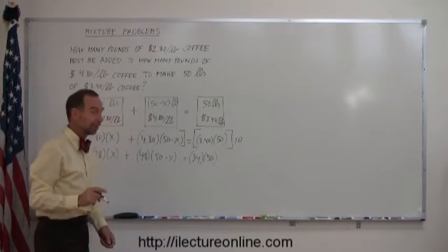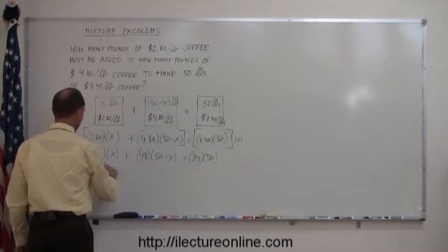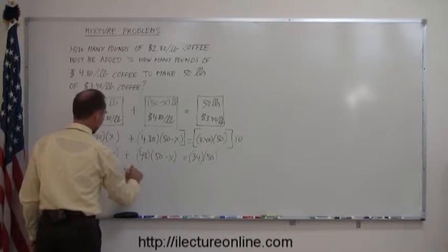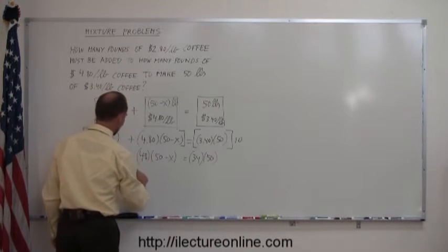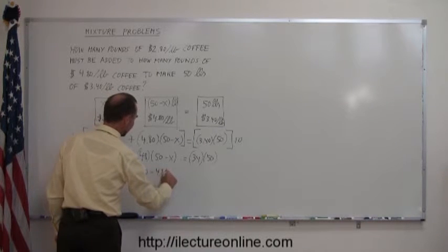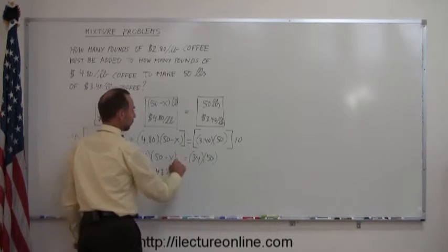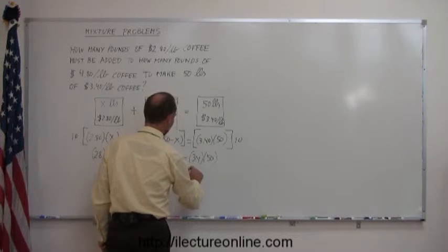I still have parentheses. I need to get rid of parentheses. I'm multiplying everything through. I get 28X here plus 48 times 50. 50 times 50 is 2,500, so that would make it 2,400 minus 48X equals 34 times 50. 30 times 50 is 1,500, 4 times 50 is 200. That's 1,700.